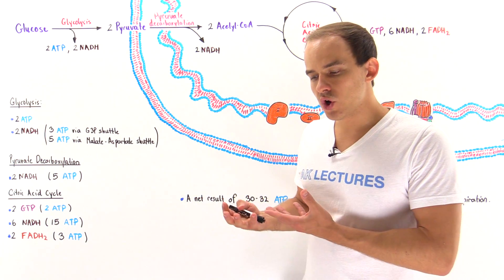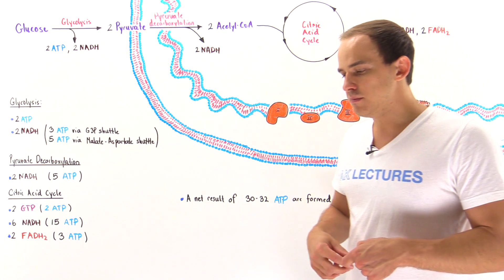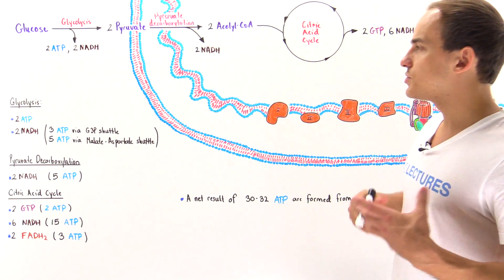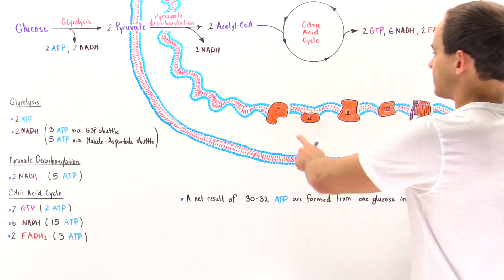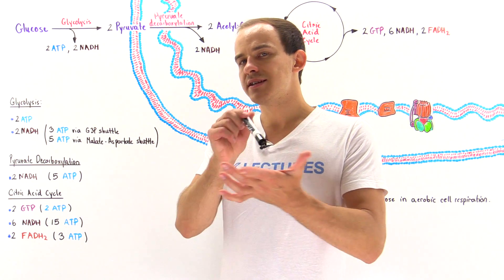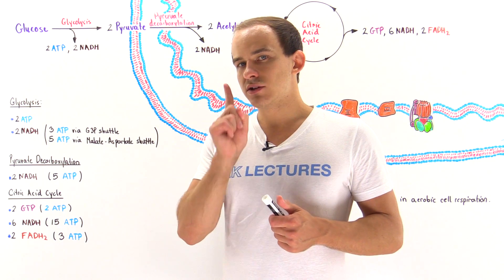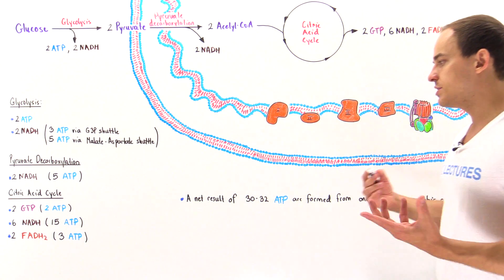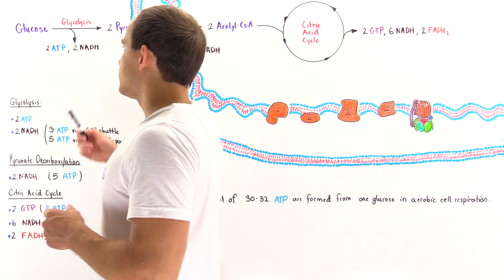When glucose is broken down in aerobic cell respiration, we produce ATP molecules. Some are produced in glycolysis, and then we generate the remaining ATP molecules in the citric acid cycle and on the electron transport chain. The question is: what is the actual number of ATP molecules generated when a single glucose is broken down in aerobic cell respiration? This is what we will discuss in this lecture, beginning with glycolysis.